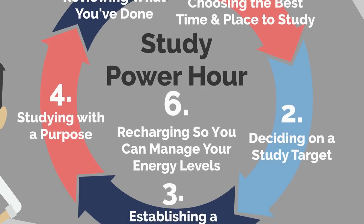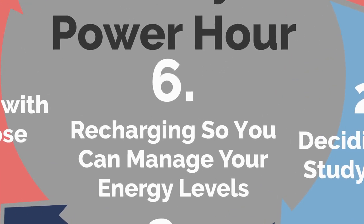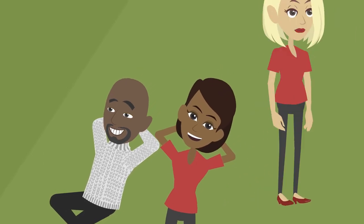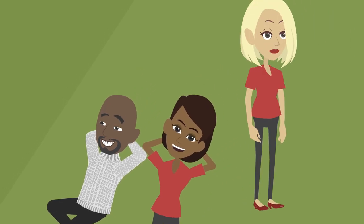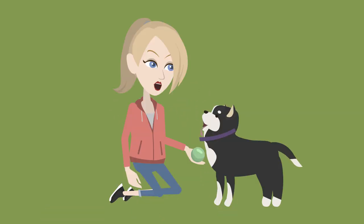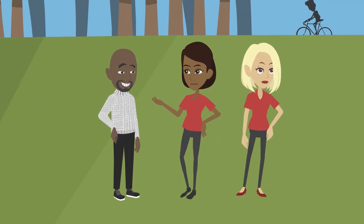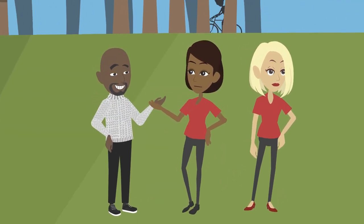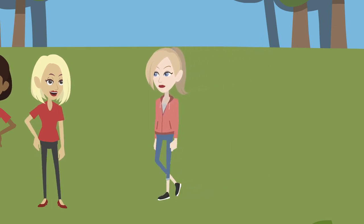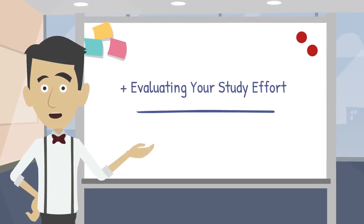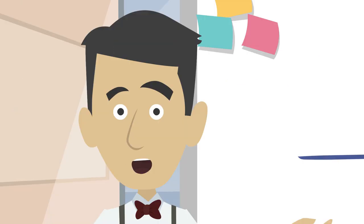And number six: recharging so that you can manage your energy levels. Before students begin their next study power hour, they should take at least a 10-minute break so that they can manage their energy levels by recharging in a timely manner. They can go outside, take a walk, and find a way to decompress. They should keep a log of how they performed their study power hour so that they can use it to review and plan their next one.